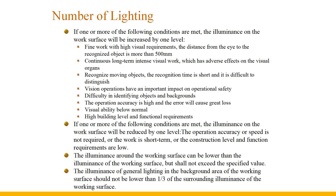Conditions for reducing illuminance: first, job accuracy or speed is not required; second, temporary work; third, the building grade and functional requirements are low. The illuminance of adjacent surroundings with a width of not less than 0.5 m outside the working surface may be lower than the illuminance of the working surface, but shall not exceed the specified value. The illuminance of general lighting in the background area of the working surface should not be lower than one-third of the surrounding illuminance of the working surface.